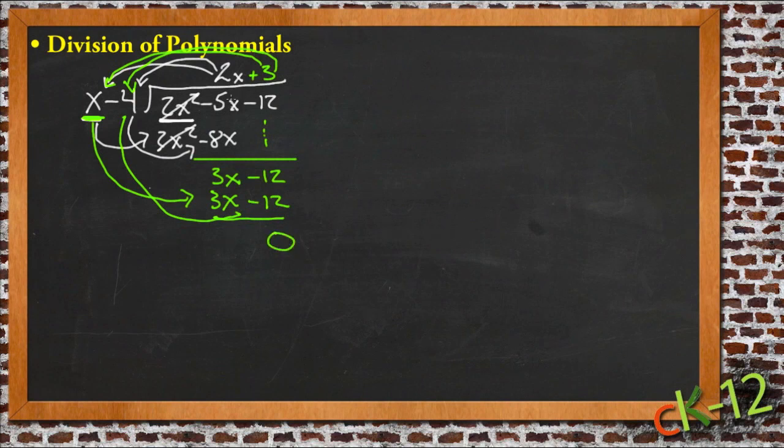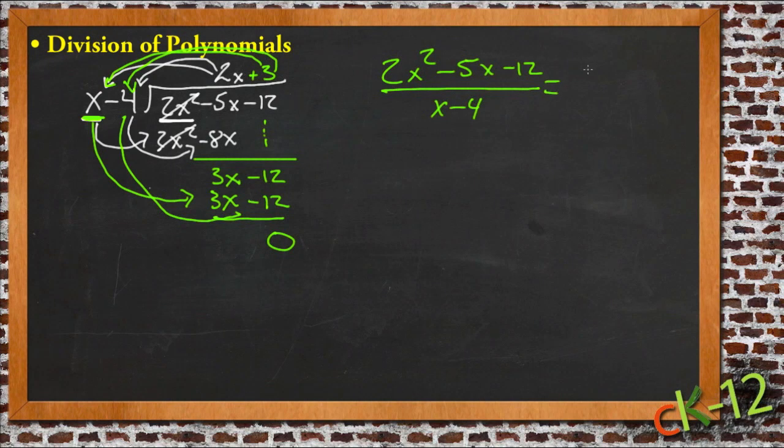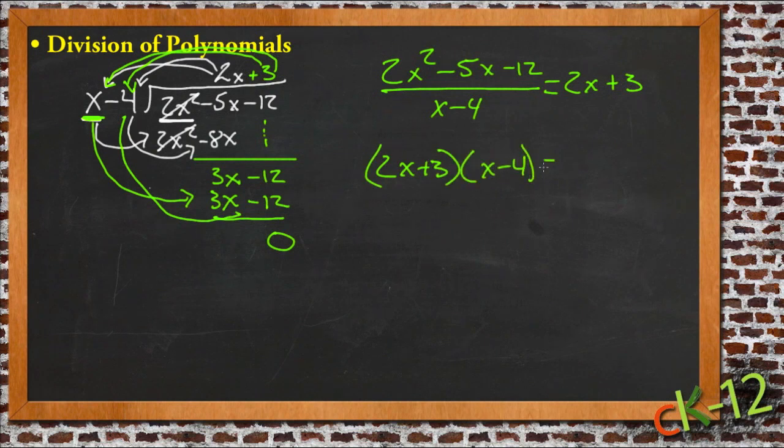So that tells us that 2x squared minus 5x minus 12 divided by x minus 4 equals 2x plus 3, which should also tell us that 2x plus 3 times x minus 4 equals 2x squared minus 5x minus 12.